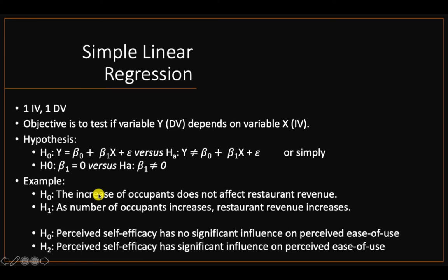For example: 'The increase of occupants does not affect restaurant revenue' — we are talking about hotels here. For the alternative hypothesis: 'As number of occupants increases, so does restaurant revenue.' Another example: 'Perceived self-efficacy has no significant influence on perceived ease of use.' The alternative hypothesis would be: 'Perceived self-efficacy has a significant influence on perceived ease of use.'